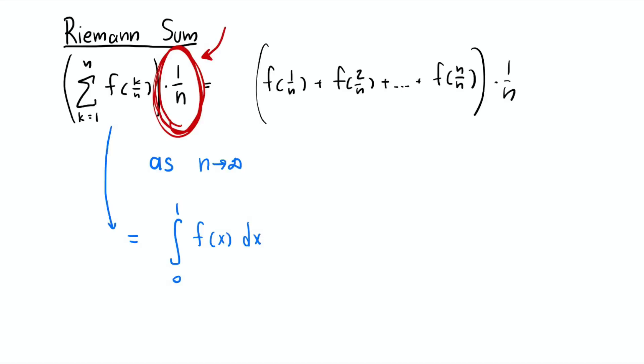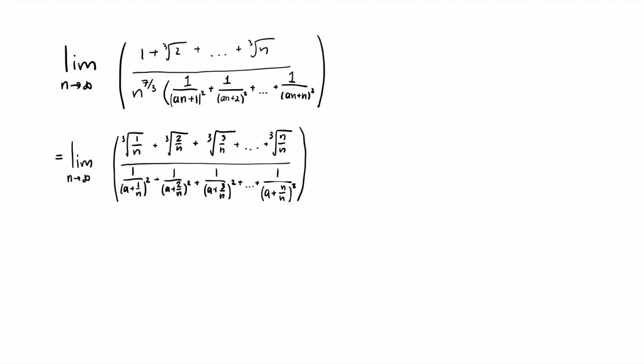If you recall the formula for Riemann sum, this is not Riemann sum yet because we need 1 over n as well. But that's an easy fix because we have the sum on top and bottom, so we can just multiply 1 over n on top and bottom, and you match it precisely. Then take the limit. The top will be integration from 0 to 1 of cube root of x dx. The bottom will be integration from 0 to 1 of 1 over a plus x squared dx.